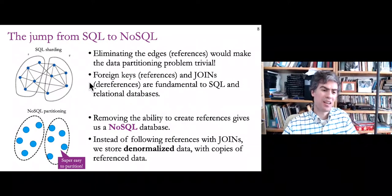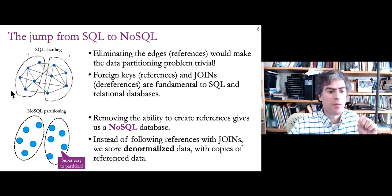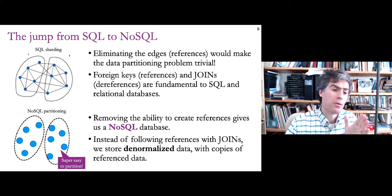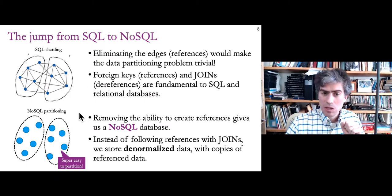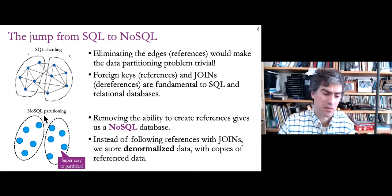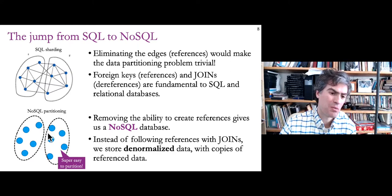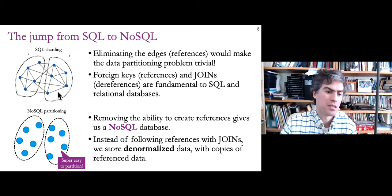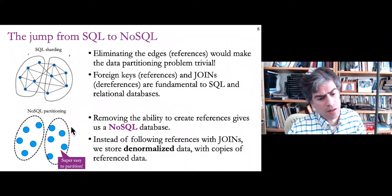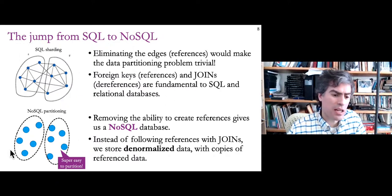So I've been talking about the problem when sharding a relational database: we want to partition it so that references between partitions are minimized. What NoSQL databases do is make this problem really easy by eliminating references. In the bottom graph, I've eliminated any references and made the dots bigger because I'm storing more data. Instead of having references to data in other rows and tables, I'm making copies of that referenced data directly in the nodes that refer to it.